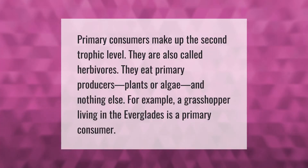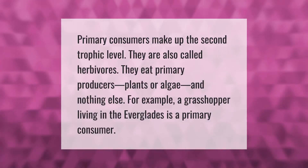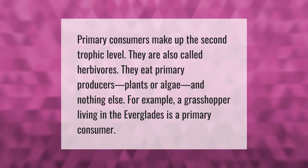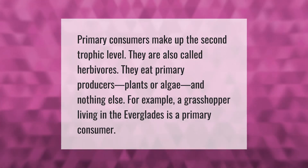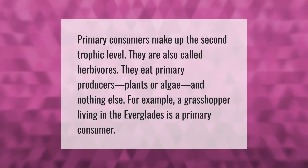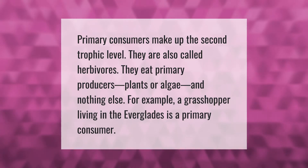Primary consumers make up the second trophic level. They are also called herbivores. They eat primary producers — plants or algae — and nothing else. For example, a grasshopper living in the Everglades is a primary consumer.